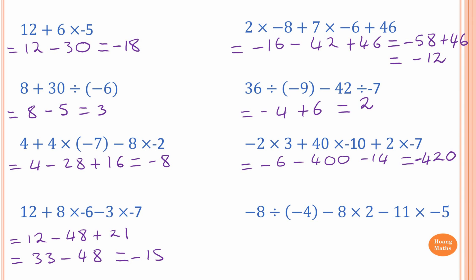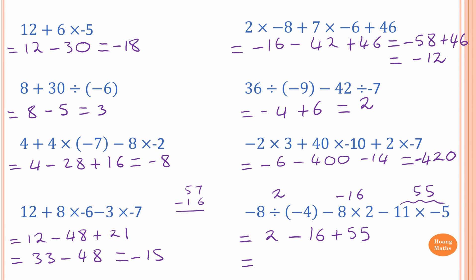Last one: negative 8 divided by negative 4 minus 6 times 2 minus 11 times negative 5. Do division and multiplication first. Negative 8 divided by negative 4 — two negatives give a positive — so that is 2. Then 6 times 2 is 12, so negative 12. Then negative 11 times negative 5 — two negatives give a positive — so 55. Now: 2 minus 12 plus 55. Do 2 plus 55 which is 57, then 57 minus 16 — wait, 57 minus 16 is 41 — so the answer is 41.